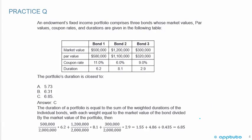This question is really easy — we're just calculating a weighted average. We don't need the par value or the coupon rate; this is just an example of a question giving you extra information. Extra information on questions often confuses some people — that's why the pass rate is at 42%.